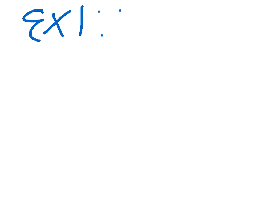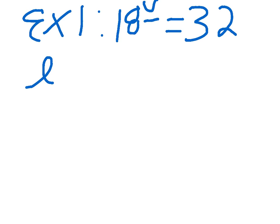So we have 18 to the power of V is equal to 32. Now I'm trying to solve for V. So you're trying to see, 18 to what power is 32? So you put it in logarithmic form, which is log base 18, 32 equals V.